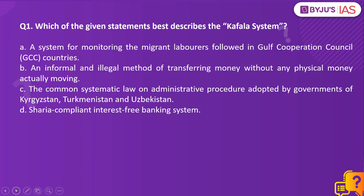Which of the given statements best describes the Kafala system? Option A: A system for monitoring the migrant laborers followed in the Gulf Cooperation Council countries. Option B: An informal and illegal method of transferring money without any physical money actually moving. Option C: The common systematic law on administrative procedure adopted by governments of Kyrgyzstan, Turkmenistan and Uzbekistan. Option D: A Sharia-compliant interest-free banking system.